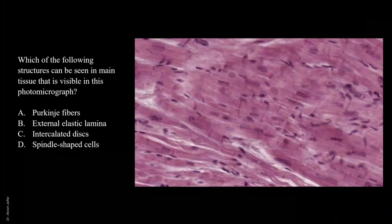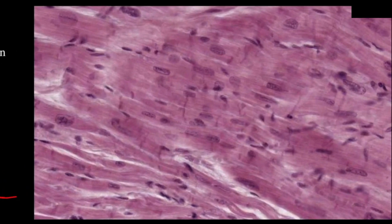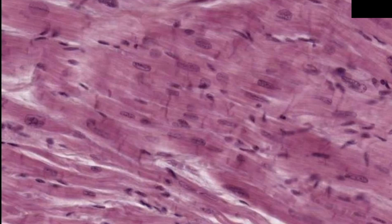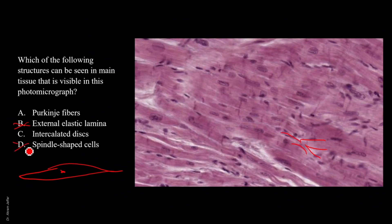Which of the following structures can be seen in the main tissue visible in this photomicrograph? Does it show an external elastic lamina? I cannot see an internal or external elastic lamina. Do you see spindle-shaped cells? Spindle-shaped cells — muscle fibers — they are smooth muscle. But is this smooth muscle? This looks striated. It's a muscle, but it looks like striated muscle, not smooth muscle. It is cylindrical and also branched. So not spindle-shaped.